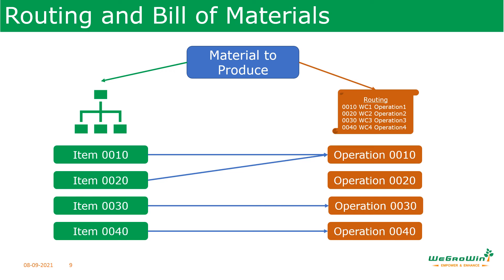For example, in liquid manufacturing and packing, the first operation is mixing — only the raw materials for mixing the liquid are used there, not packing materials. The second operation is packaging, where bottles are used to fill the liquid. Like this, you can assign which operation uses which material in the routing. How to do this will be discussed in the next lesson.